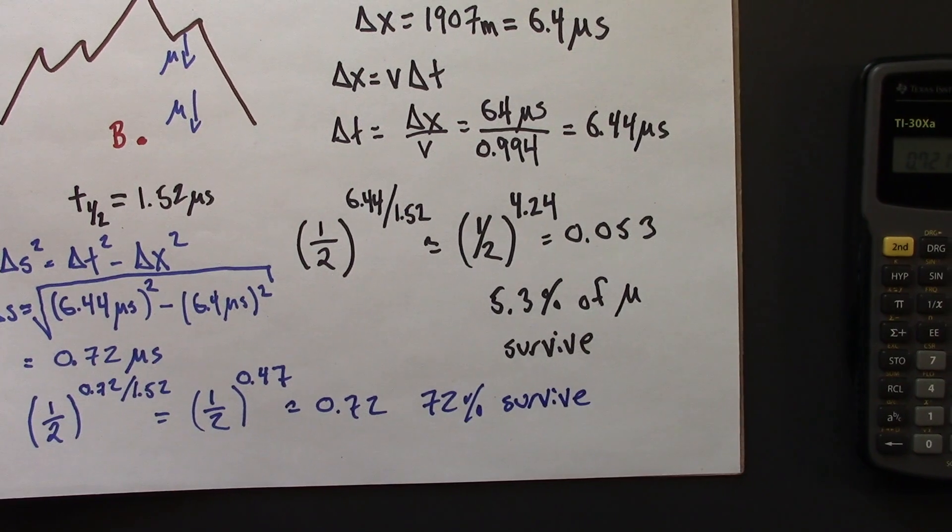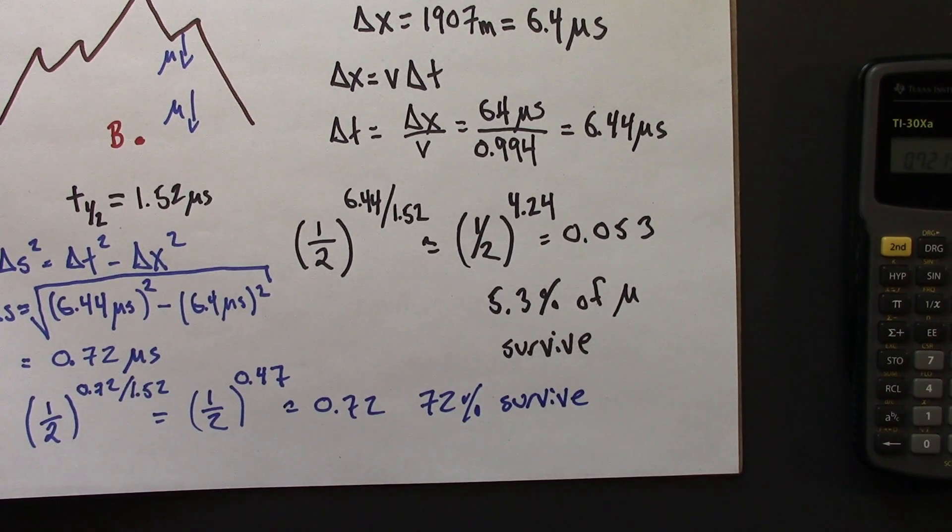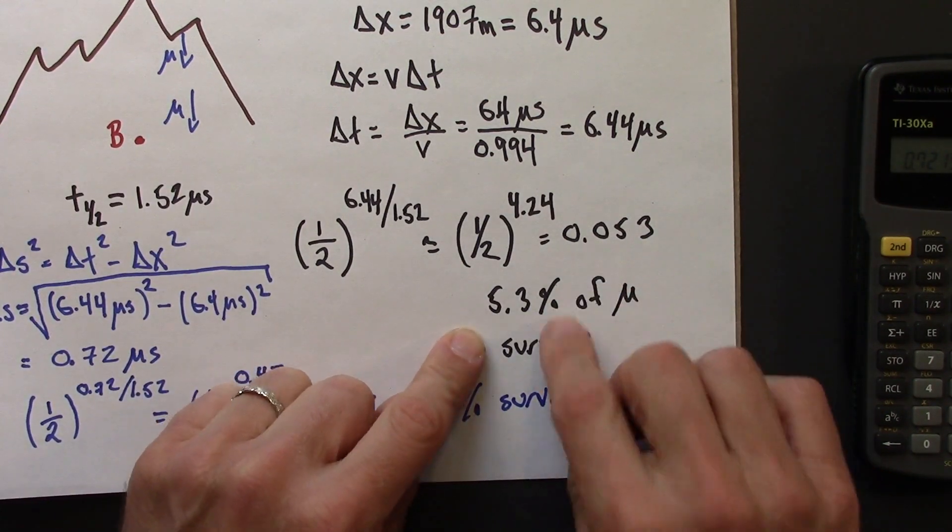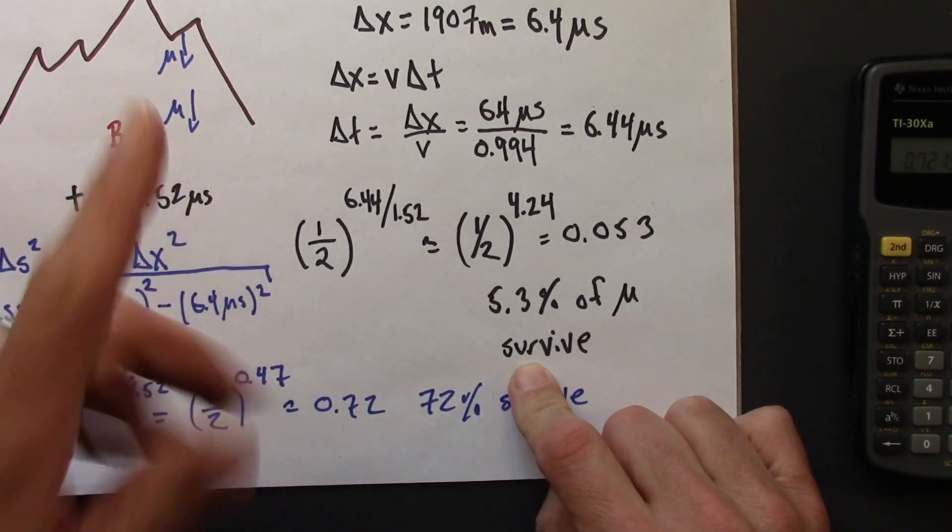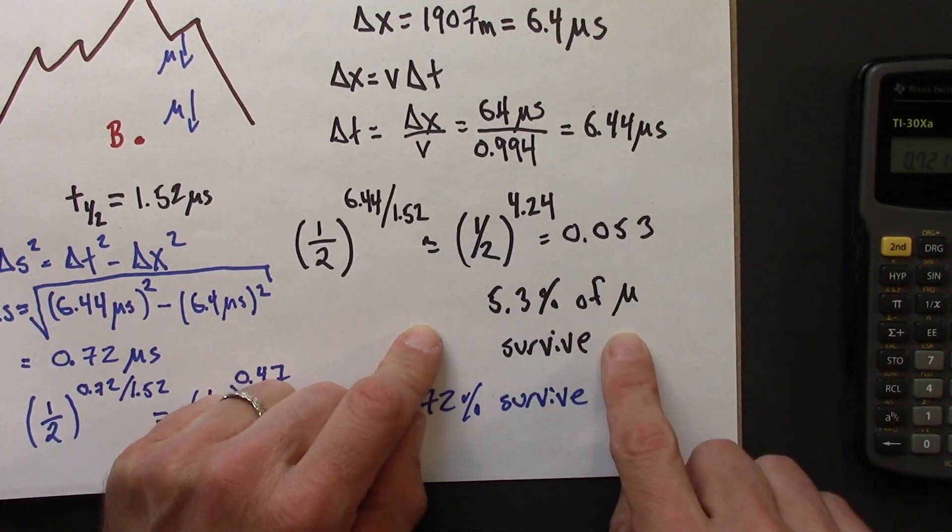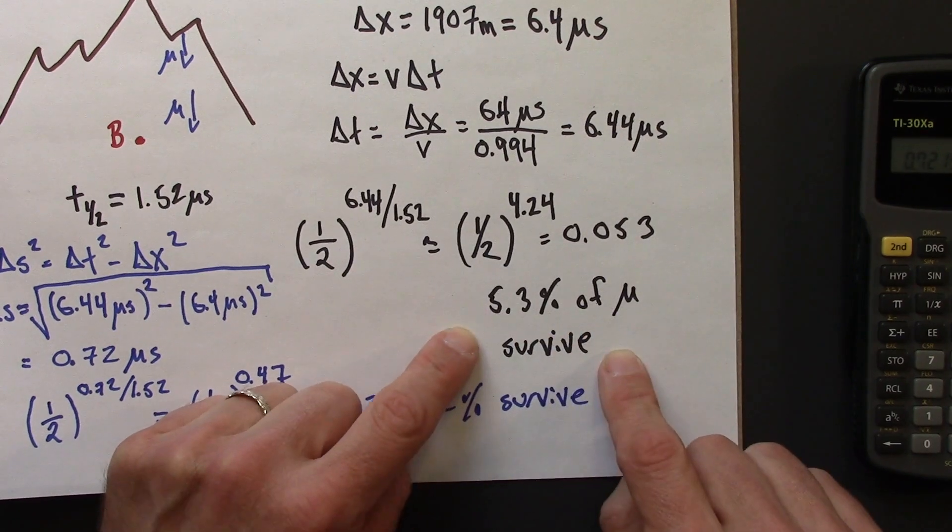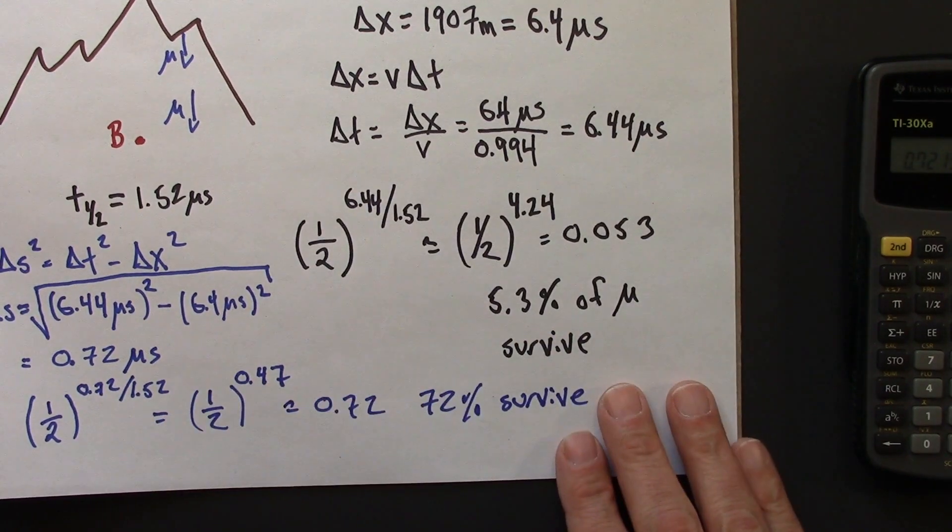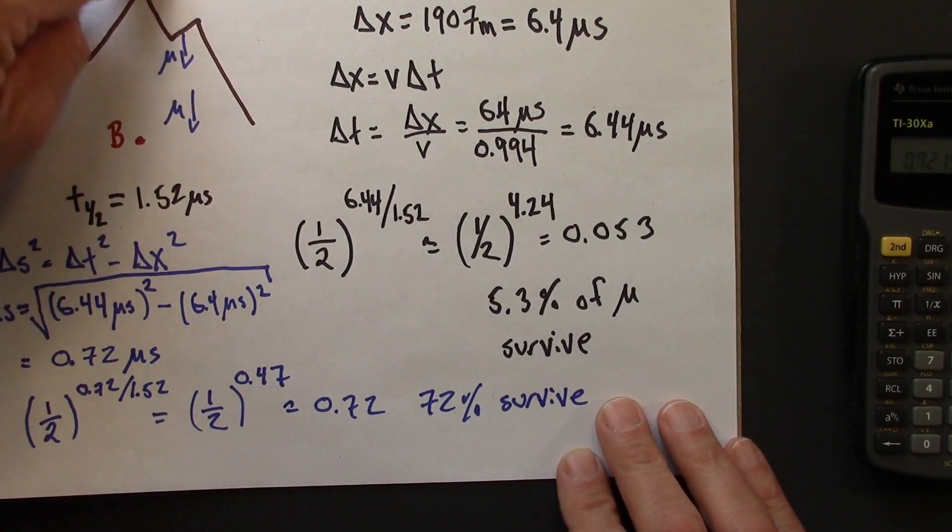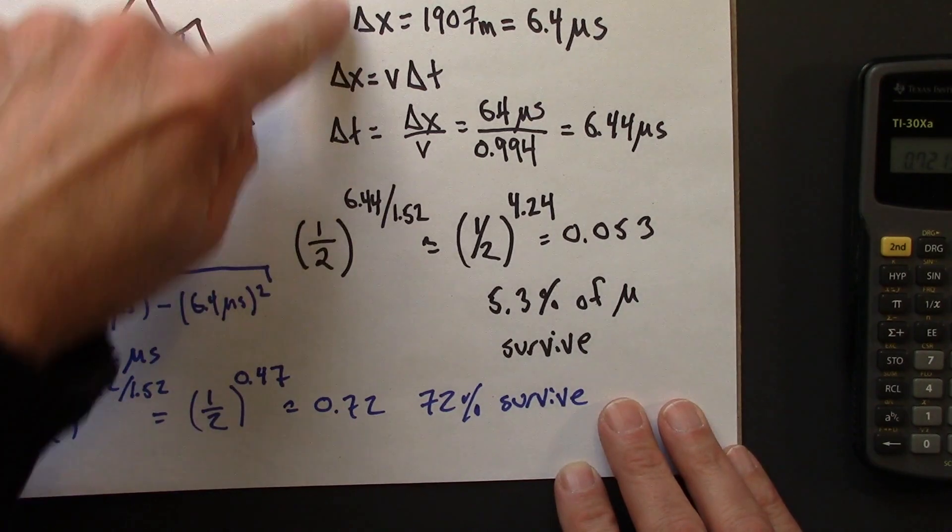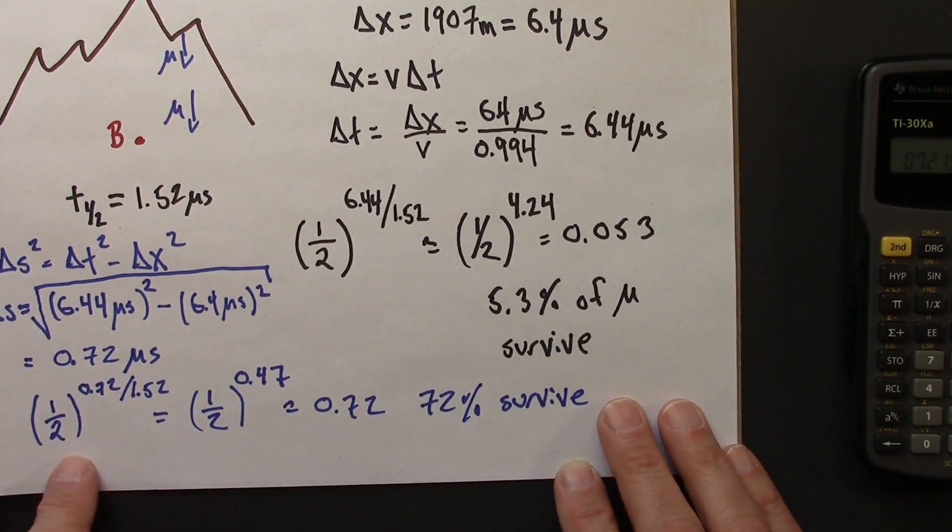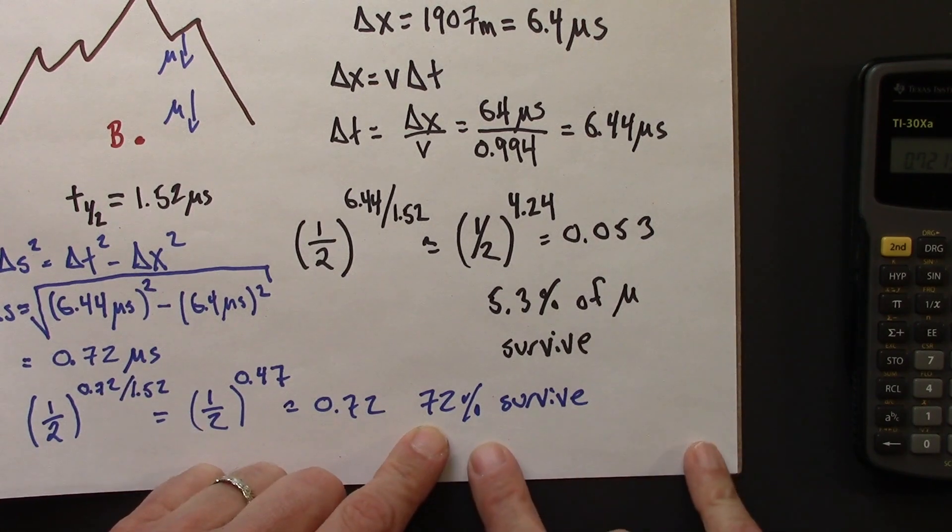So we have two different predictions. Galileo and Newton would say time is time, and the muons experience this true universal time. Their time interval is 6.44 seconds. Only 5.3% of the muons will survive to Earth. Special relativity says the muons experience a different time because they're moving relative to us. Their time is really different, and 72% of them are going to survive.